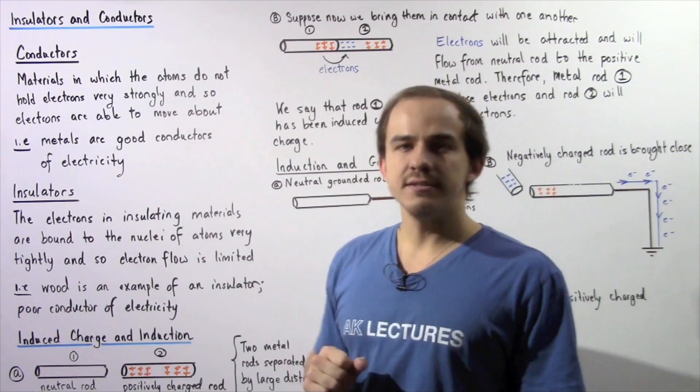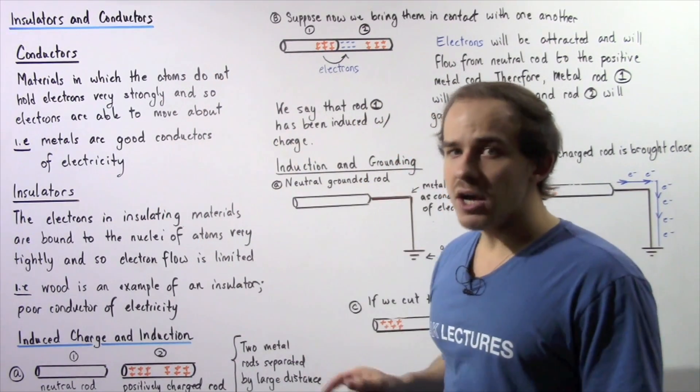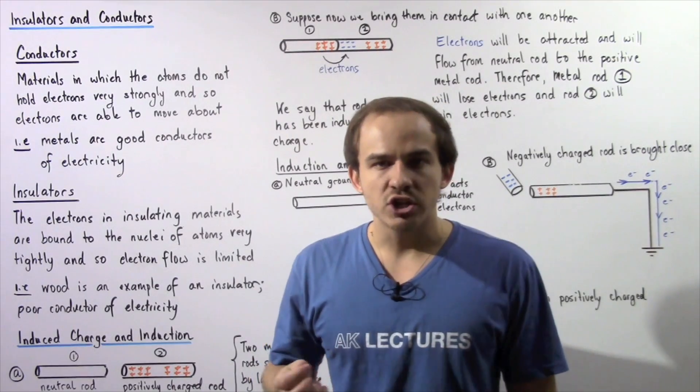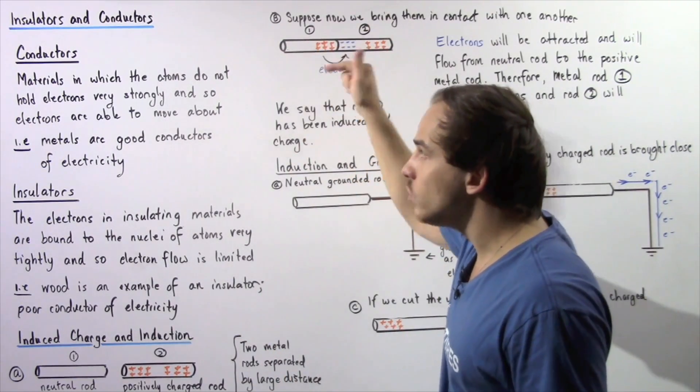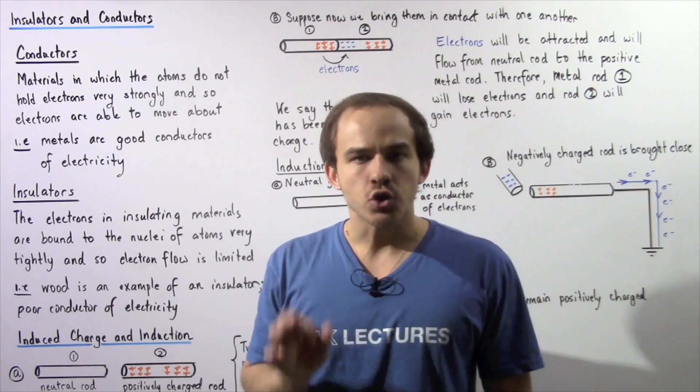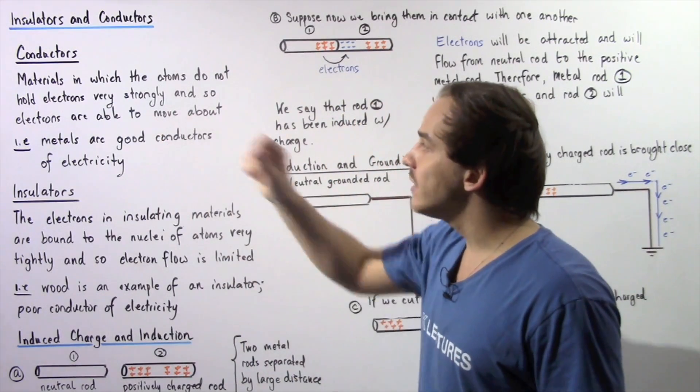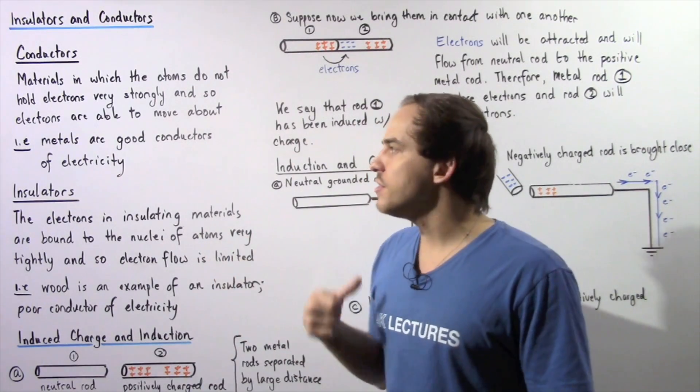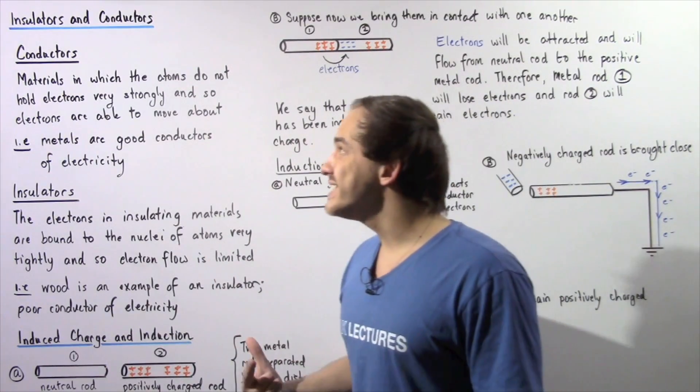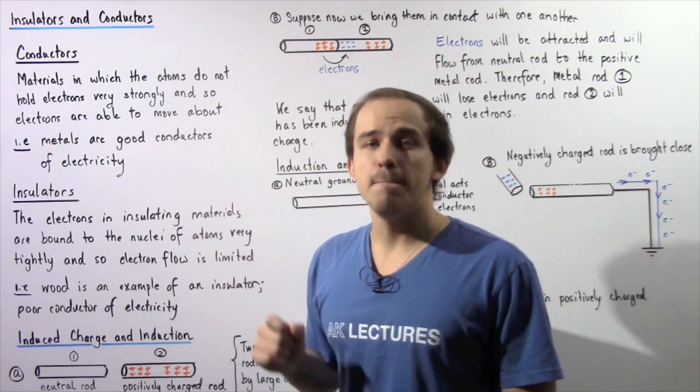We have conductors and insulators. A conductor is essentially an object or material in which the atoms do not hold electrons very strongly, and that means electrons are able to move rather freely within that material. One example of a conductor is metal.